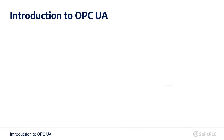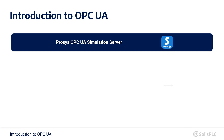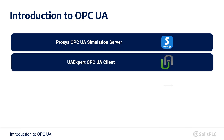Then we will move on to the practical side and we will download the ProSys OPC UA simulation server, which allows us to install an OPC UA server directly on your machine. This works on the most popular operating systems such as Windows, Linux, and Mac OS. We will also download UAexpert, a very popular and widely used OPC UA client, so we will have both a client and a server running on our machine without needing any extra hardware.